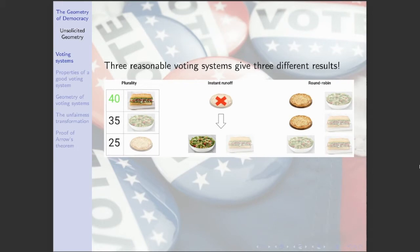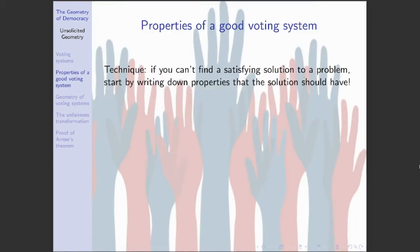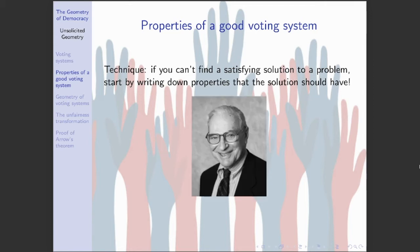We came up with three pretty reasonable voting systems and they gave us three completely different answers — even for the winner of the election, let alone the down-ballot preferences. Which of these three systems is best or correct? What do best or correct even mean in this context? It's not at all clear. When confronted with this kind of conundrum, mathematicians will often start by writing down properties that a good solution should have, and check whether any example satisfies all of those properties.